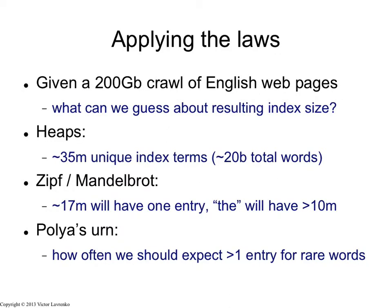All right, so let's talk about the practical application of these laws. Let's say I have created a webcrawler and I gathered 200 gigs of English webpages. What do these laws allow me to guess about the text that I've gathered? I'm gathering text because I want to build a search engine. So what can I guess about the index size using the laws that we just talked about? So I have 200 gigs of English. This means I probably have about 20 billion tokens, 20 billion total words in the data, assuming about 10 bytes per word on average.